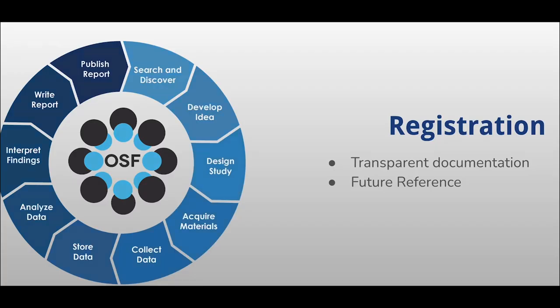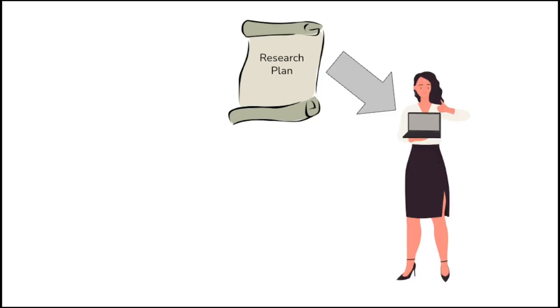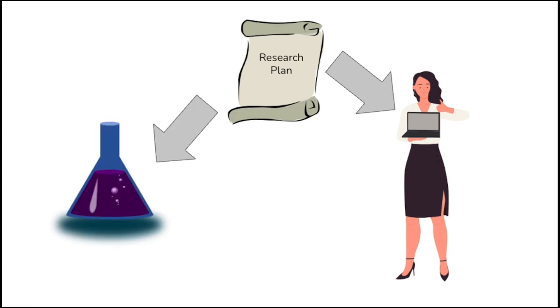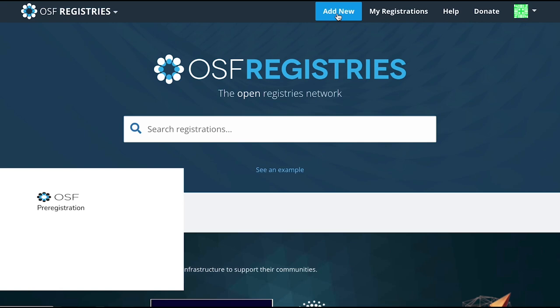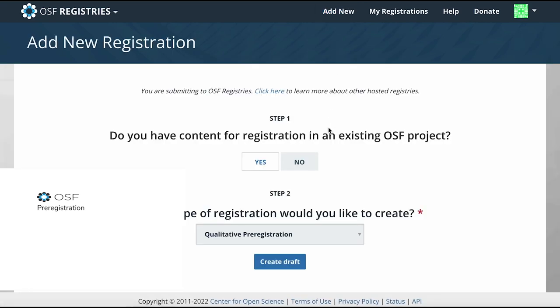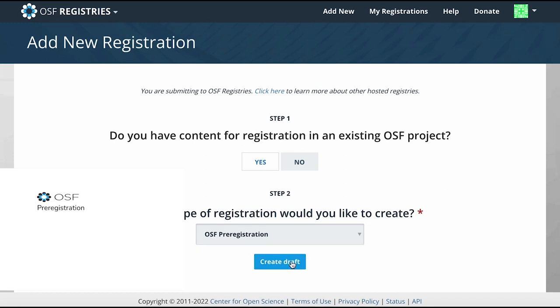Now that Sophia has a good idea for a research project, she wants to begin to design a study and start collecting any materials she might need. While searching for an idea, she was able to see firsthand how valuable it is to share your research plan for not only the credibility of the researcher, but the benefit of the scientific community. She is excited to take her first step in open science practices and recognizes that the research plans she found are called pre-registrations. Sophia decides to start to put together a pre-registration in the OSF.